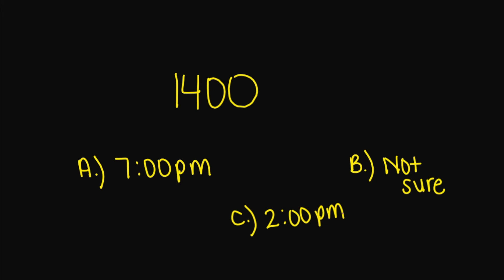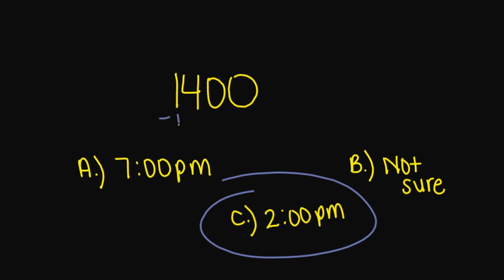So now let's look at 1400 hours. If we're converting into regular time, is this going to be A, 7 p.m.; B, not sure; or C, 2 p.m.? The answer is C, 2 p.m. Because we are going from military to regular time, we subtract 12, and that takes us to 2 p.m.